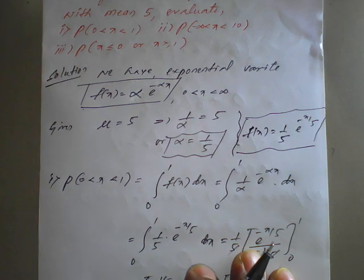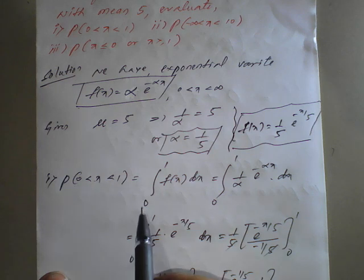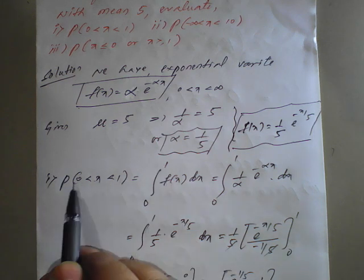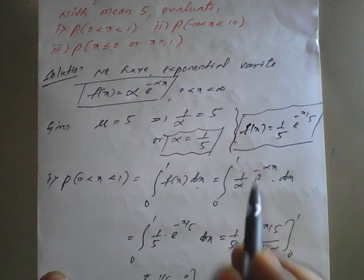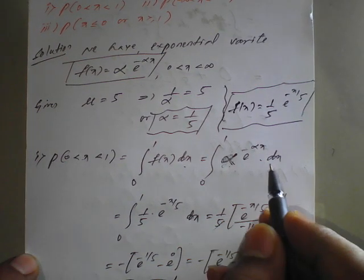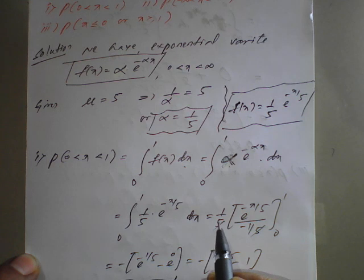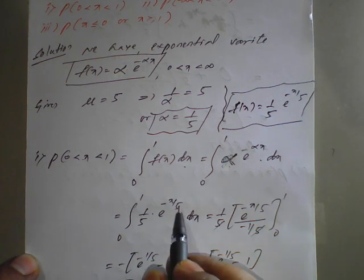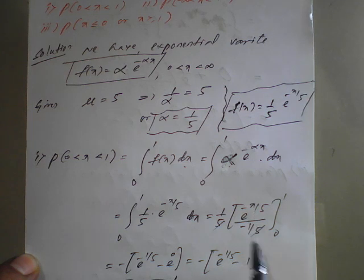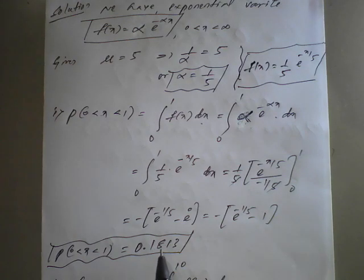For the first result, P(0 < X < 1): the range is 0 to 1, so we integrate from 0 to 1 of (1/φ) e^(minus x/φ) dx. Integrating, (1/φ) times e^(minus x/φ) divided by (minus 1/φ) — the φ's cancel, minus sign remains. Applying upper and lower limits, on simplification we get the answer 0.1813.